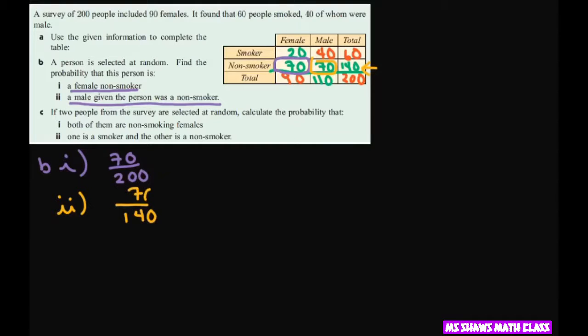So basically 50%. You can reduce these if you want. So this would reduce to 7 twentieths. And this would reduce to 1 half.